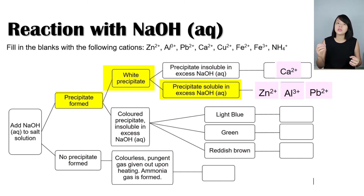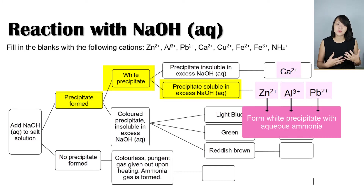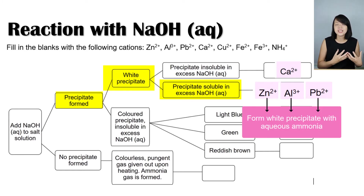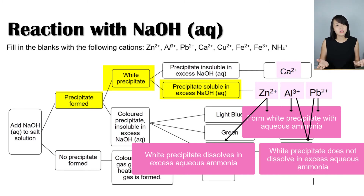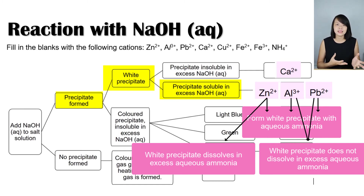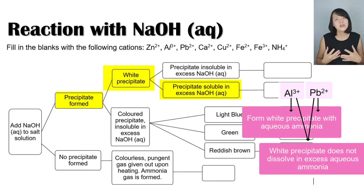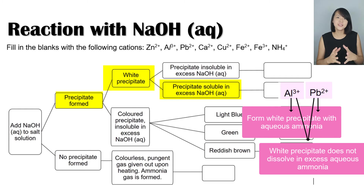When we add aqueous ammonia to the salt solution, a white precipitate will still be observed. If we further add excess aqueous ammonia and the white precipitate dissolves, we can confirm that zinc is present. For the other two ions — lead(II) and aluminium — the white precipitate remains insoluble in excess aqueous ammonia.